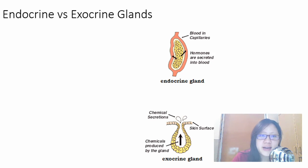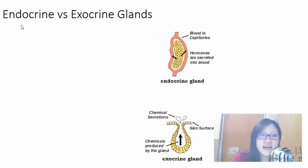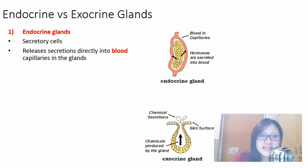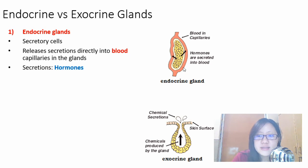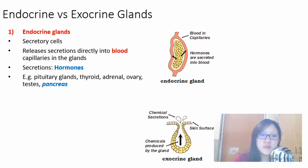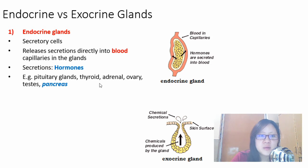First, we need to talk about what endocrine and exocrine glands are, because the pancreas acts as both. Endocrine glands are secretory cells which release secretions directly into blood capillaries in the glands. These secretions are usually hormones, which can be protein-based or lipid-based. Examples of endocrine glands include pituitary glands — the posterior one helps secrete anti-diuretic hormone (ADH) — thyroid glands, adrenal glands, which are in charge of adrenaline, ovary, testes, and pancreas. These all secrete some sort of hormone.